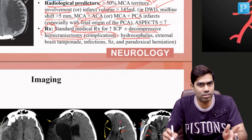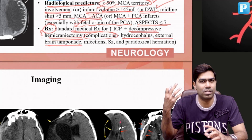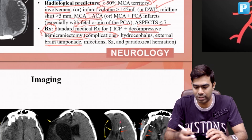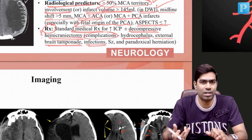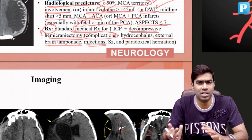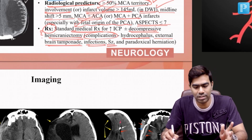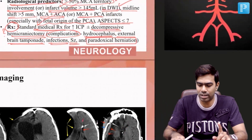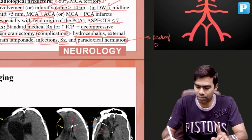Complications of decompressive hemicraniectomy include: hydrocephalus, external brain tamponade due to hemorrhage from surgery, infections of fluid collections leading to severe sepsis and brain infection, and seizures.